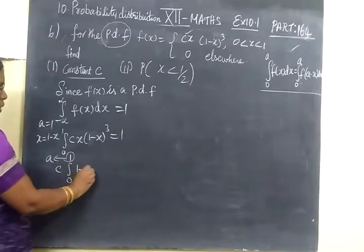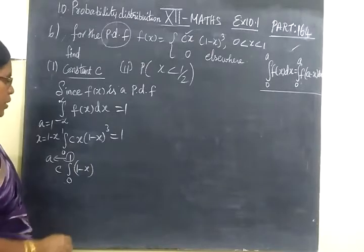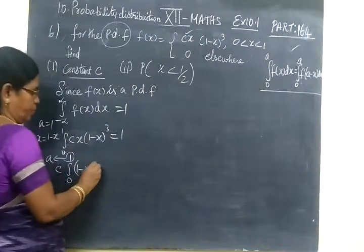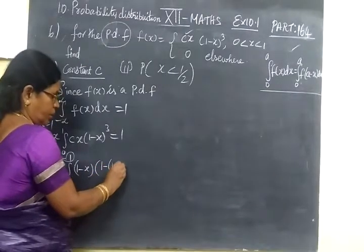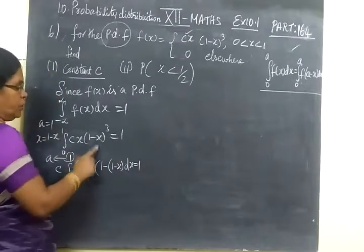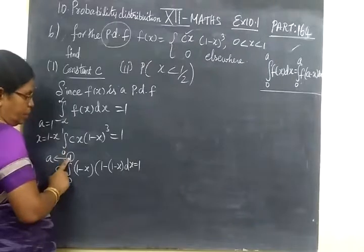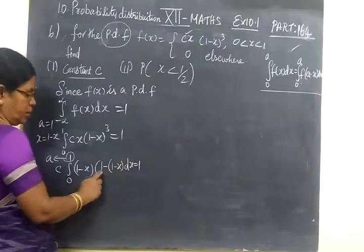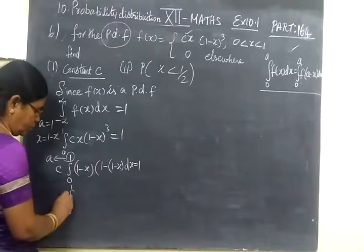So you are writing a minus x. That means 1 minus x. Otherwise, you can use a minus b equal to found out and take x inside. Any way you can do. So 1 minus, for x you are writing 1 minus x, dx equal to 1. You take minus inside.